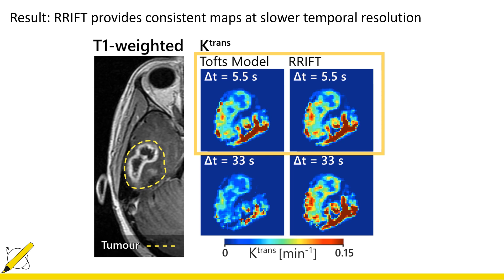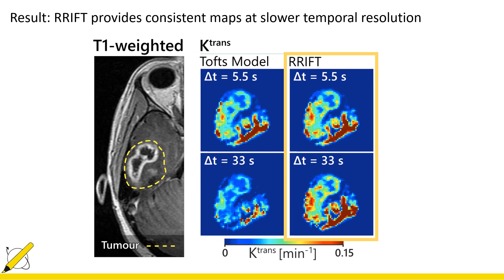However, if the data was downsampled to 33 seconds, then the map from the TOFTS model becomes underestimated while the map from the RIFT method tends to stay consistent. This means we can use the RIFT method even at a slower temporal resolution and still get maps that resemble a high temporal resolution scan.